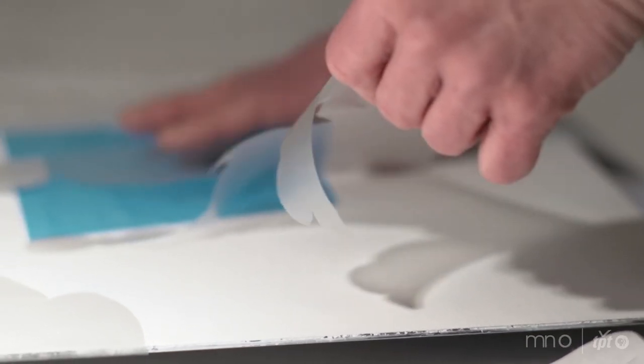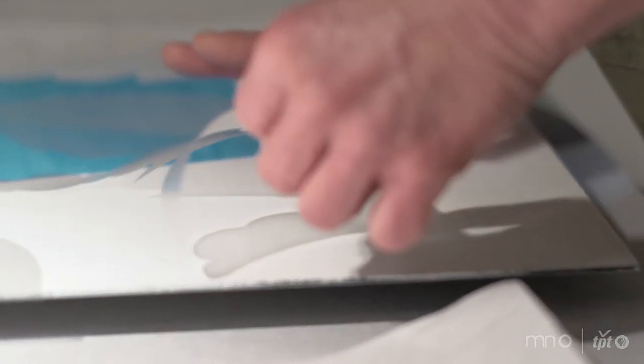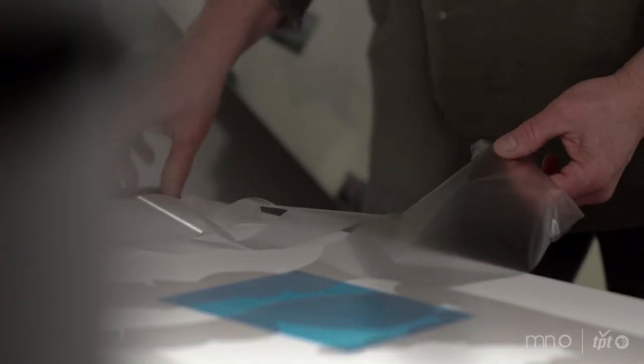The forms of the stencils came from the shapes that I was observing within the glass. Sometimes they're not even a part of the finished work. Sometimes they're just under a thin layer and you can barely see that they're there. Other times it's just part of the overall textural vocabulary of the work.